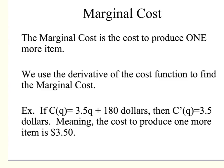In this example, C of Q is 3.5Q plus $180. The derivative would simply be $3.50, meaning that the cost to produce one more item is $3.50. We will be looking at that and comparing it to our average cost down the road, but that's how this concept is built.